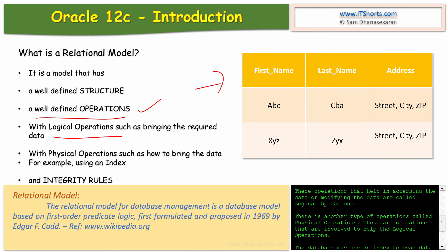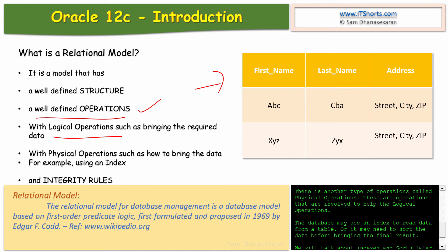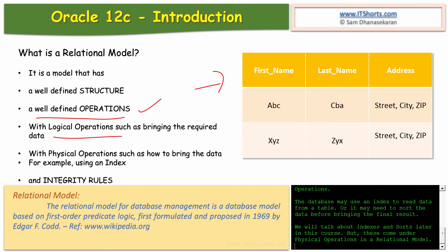There is another type of operation called a physical operation — these are operations involved to help logical operations. For example, we may send a query to read data, which is a logical operation, but how the database brings the data is a physical operation. A database may use an index to read data from a table, or it may need to sort the data before bringing the final result. We will talk about indexes and sorts later in this course — these come under physical operations in a relational model.